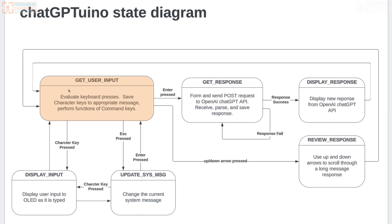While you're back in 'get user input,' before pressing any other keys, the OLED is still displaying the previous message returned from the API. If the message is longer, during the display response phase the message comes in word by word, fills up the whole OLED across four lines, and when the next word comes in it scrolls the text up — so you keep seeing new text pop in and scroll up.